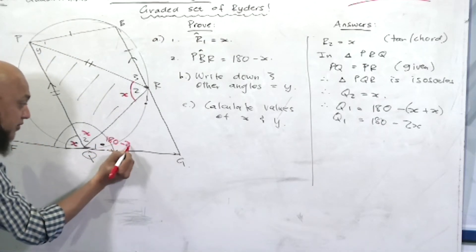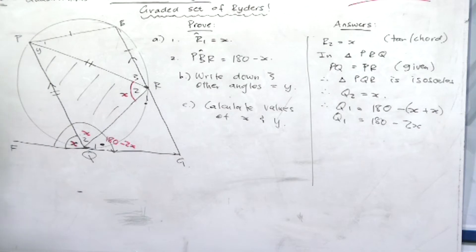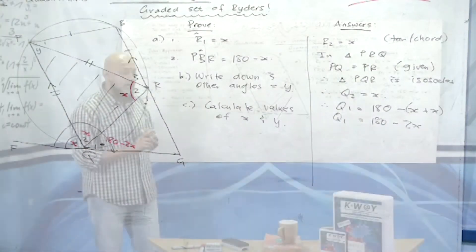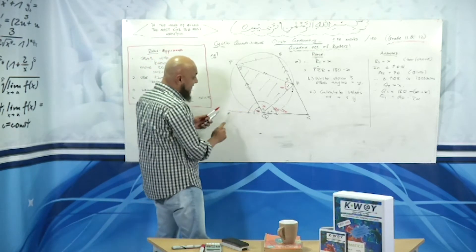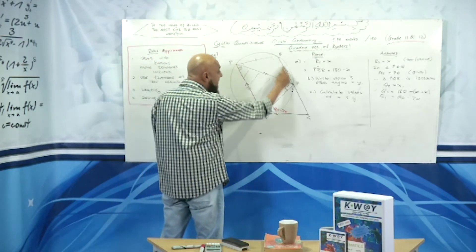Okay, so we've got angle q1 to be equal to 180 minus 2x. We need to get to r1. Which other angle can be related to x now? Remember something, these two lines are parallel.